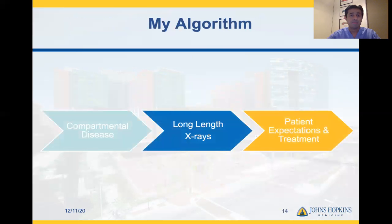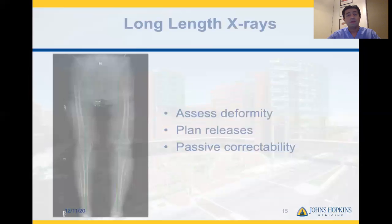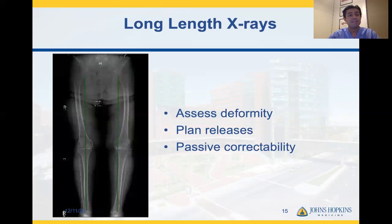My algorithm is very simple. I like to think of knee arthritis as a compartment-specific disease. I then like to obtain long-length radiographs to understand which compartment is affected and which surgical treatment to plan for the patient, along with which ligaments to release. I'd like to temper this with patient expectations and treatment options. Long-length radiographs allow me to assess the varying degrees of deformity, assess how much that deformity can be passively corrected or corrected by the implant, and then plan for appropriate bone cuts and releases.